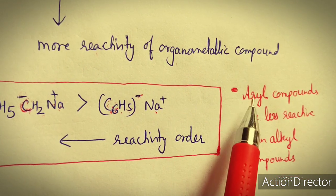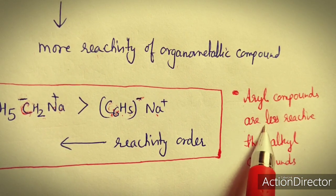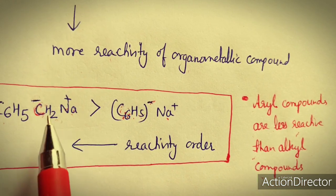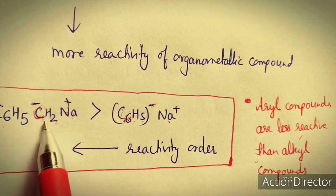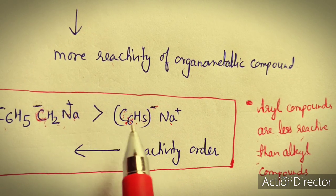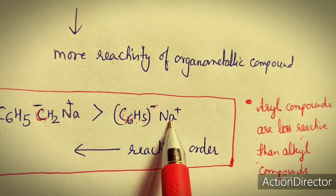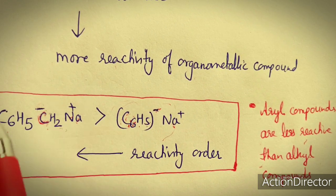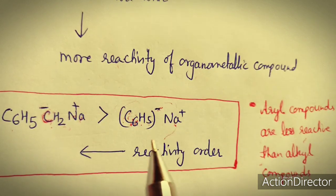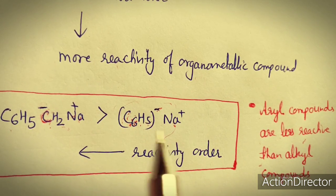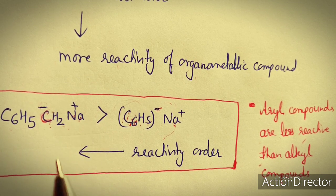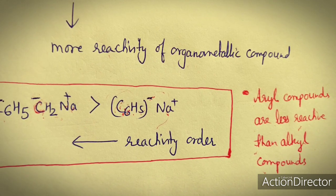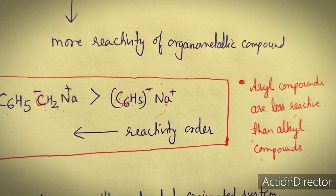We can also say that aryl compounds are less reactive than alkyl compounds. In the benzyl case, CH₂ is directly bonded to the metal — that is an alkyl compound. In the phenyl case, the benzene ring is directly attached to sodium — that is an aryl compound. An aryl compound is more stable compared to an alkyl compound, so alkyl organometallics are more reactive compared to aryl compounds.